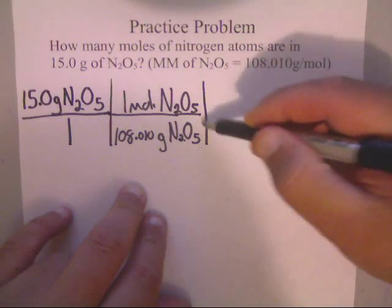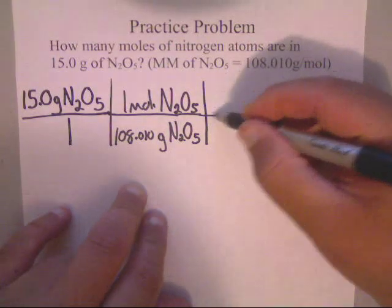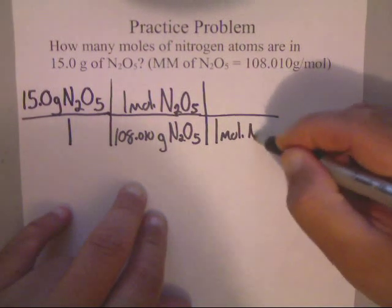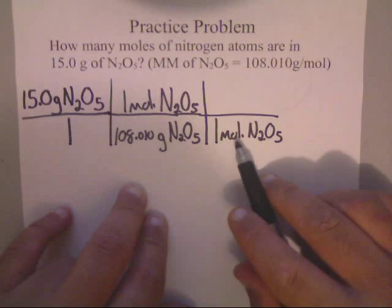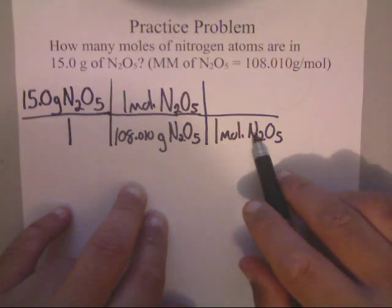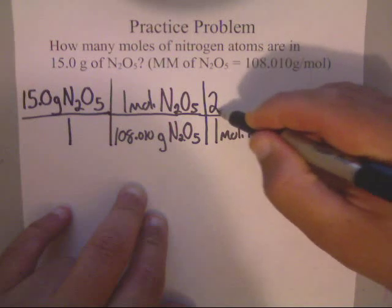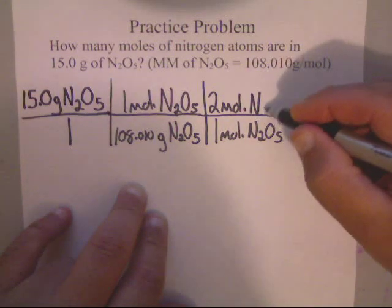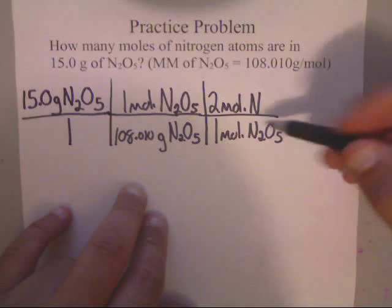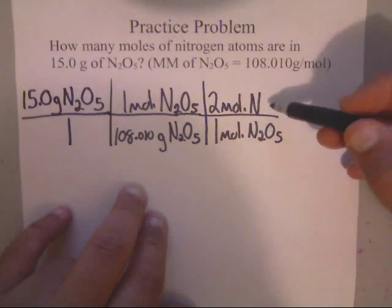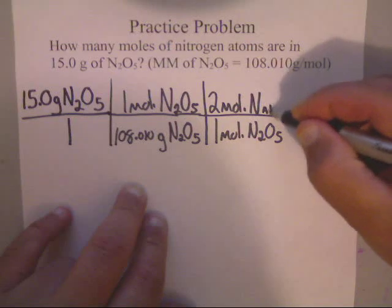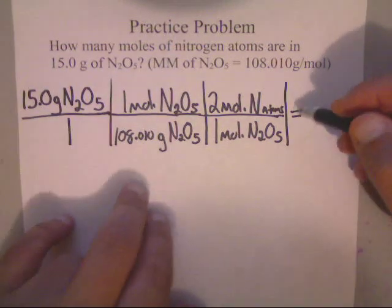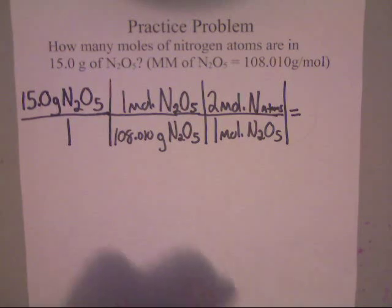Now next step is to do this. If this is one mole of N2O5, I'm going to match it up diagonally. One mole of N2O5. Now let's look at this. I've got two moles of nitrogen atoms. So I'm going to write two moles of nitrogen. You can write atoms down here if you want to or you don't have to. There's the units on it.